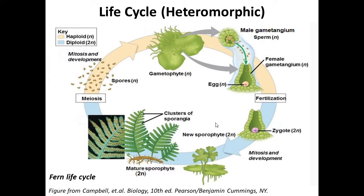In the life cycle of ferns, the main plant body is the sporophyte, which is diploid. Clusters of sporangia are present on the underside of the leaf. Spores are produced in sporangia through meiosis, so they are haploid. These spores on germination give rise to gametophytes. If both male and female gametophytes are present on the same plant, it is monoecious; if separate, it is dioecious. Heterosporous species are always dioecious.